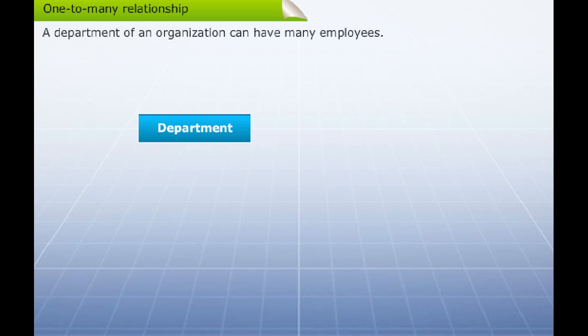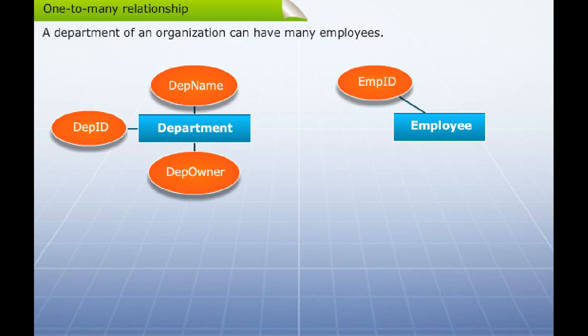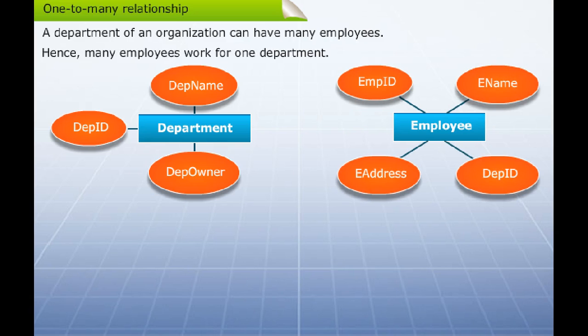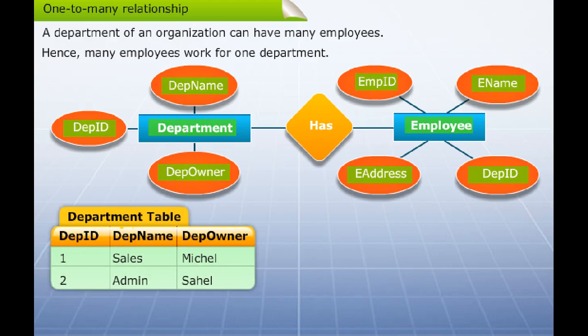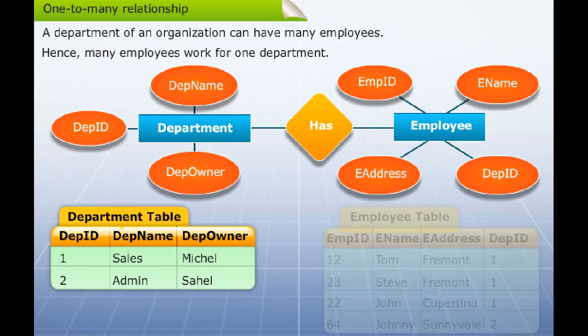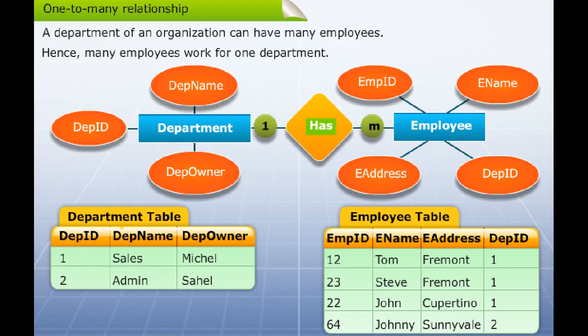A department of an organization can have many employees. Hence, many employees work for one department. The department's details are stored in a table named Department and the details of the employees are stored in a table named Employee. This one-to-many relationship among the entities can be mapped by storing the department ID of an employee in the employee table.